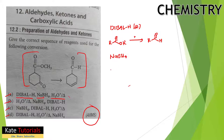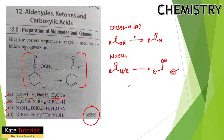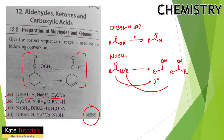NaBH4 converts aldehydes or ketones to alcohols. If the substrate is an aldehyde (RCHO), we get a primary alcohol (RCH2OH). If it is a ketone, we get a secondary alcohol. This is the function of NaBH4.